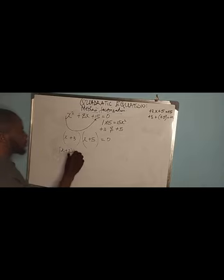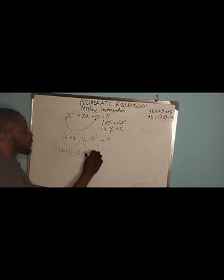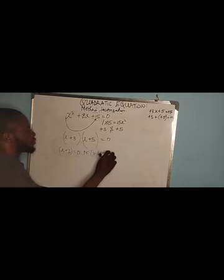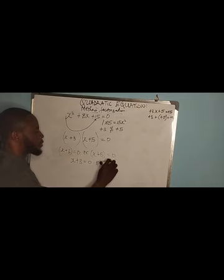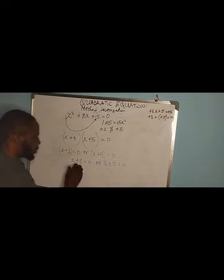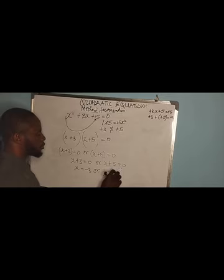This implies that x + 3 = 0 or x + 5 = 0. Then x + 3 = 0 gives x = -3, or x + 5 = 0 gives x = -5. These are the possible solutions to this equation.